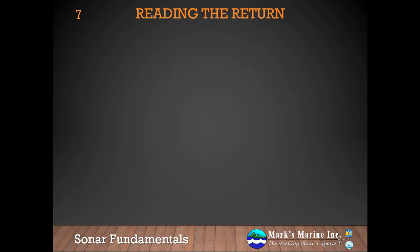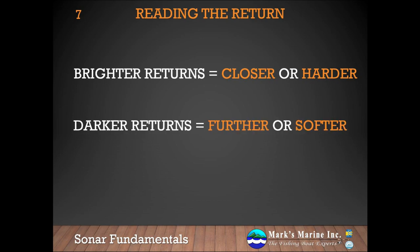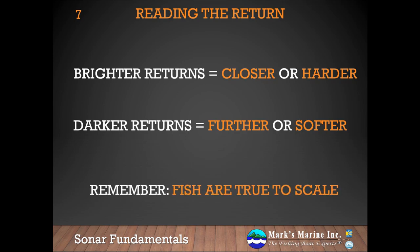Let's talk briefly about reading the return. Brighter returns are closer, harder, or more perpendicular to the transducer. Darker returns are further, softer, or sloped away from the transducer. In both cases, we're looking at the amount of energy returned to the transducer. Remember, fish are true to scale — I've often had customers bring in screenshots at 250-foot range showing me 'big fish' that were probably boulders. It's important to pick a range and grow comfortable with what the scale looks like at that range.